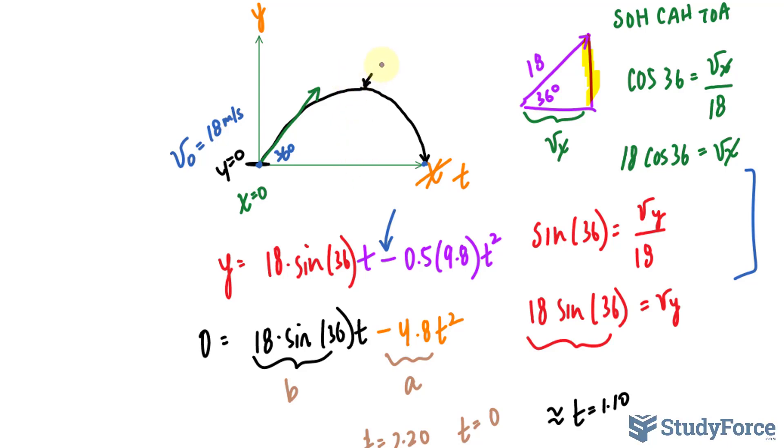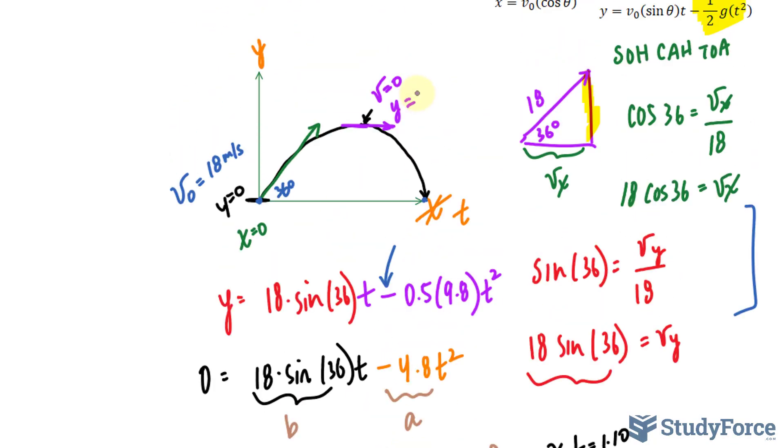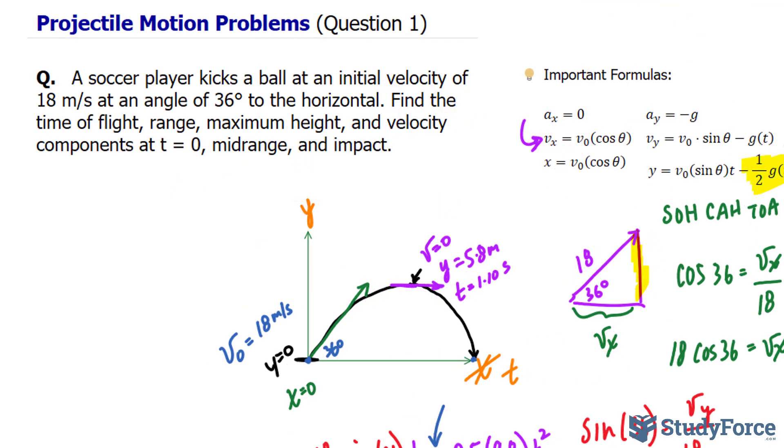So that point right there, when v = 0, remember it's flatlining here, there's no velocity. When v = 0, the maximum height is 5.8 meters, and that happens when t is 1.1 seconds. So we found the maximum height.